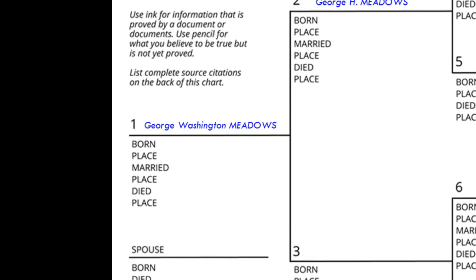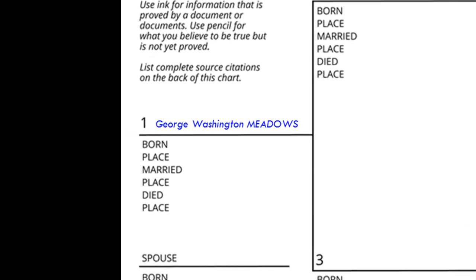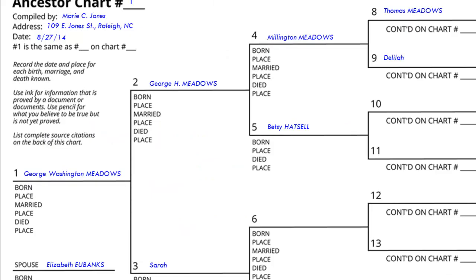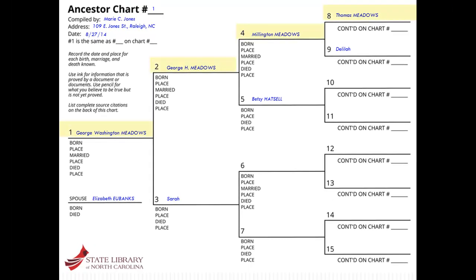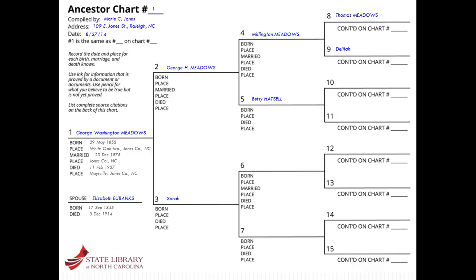Start with an individual and add that person's direct ancestors. Fathers are recorded on the even-numbered lines and mothers are on the odd-numbered lines. Include names, dates, and places of the main life events. The most helpful components are dates for birth, marriage, and death, as well as the location of each life event.